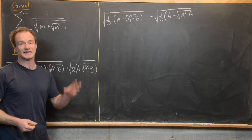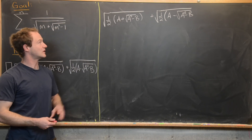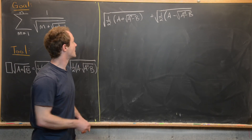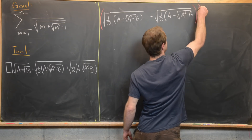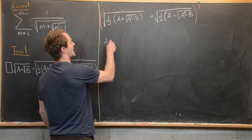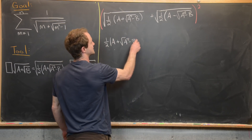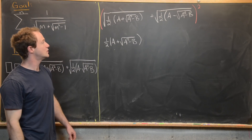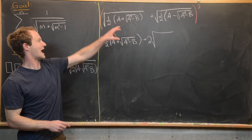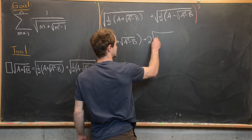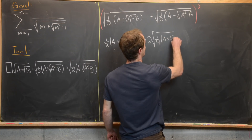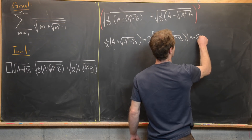Now I'm going to square this entire expression, so the equality we're building will be this squared equals a plus radical b. We're going to multiply it out: the first term squared gives us one-half times the quantity a plus the square root of a squared minus b. Then we have plus two times the product of each term, giving us a square root with one-quarter inside, times the quantity a plus the square root of a squared minus b, times a minus the square root of a squared minus b.